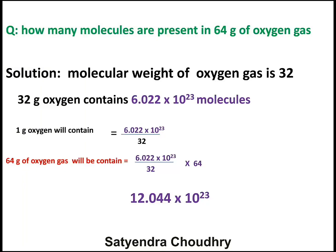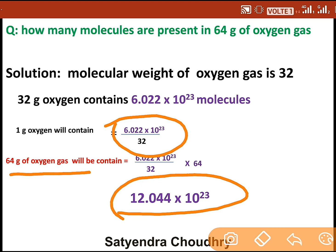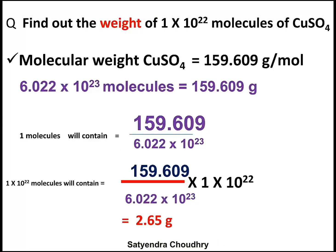To make this concept more refined, we will solve some numerical problems. In the first problem, we calculate the molecules present in 12 grams of carbon and 64 grams of oxygen gas. The molecular weight of oxygen is 32, so 32 grams of oxygen contains 6.022 × 10²³ molecules. Calculating for 64 grams, we get 12.044 × 10²³ molecules.